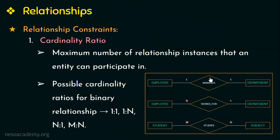The relationship is 'manages.' This is how you write a cardinality ratio. This is a one-to-one relationship: one employee can manage at most one department, and one department can have at most one manager. In another example with employee and department and the relationship 'works for,' one employee can work for at most one department, and one department can have a maximum of N employees — so this is a many-to-one relationship.